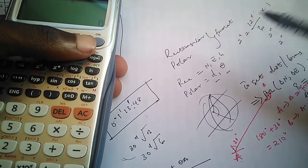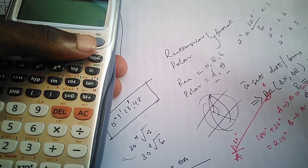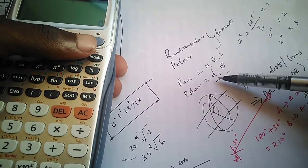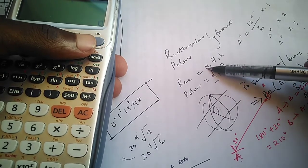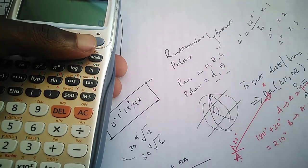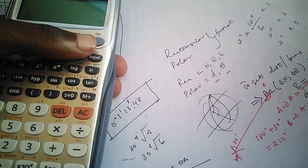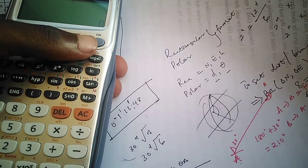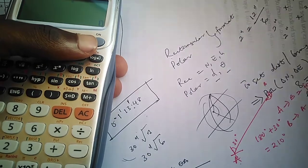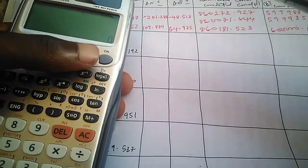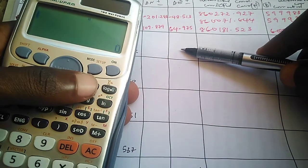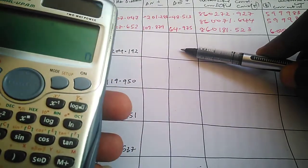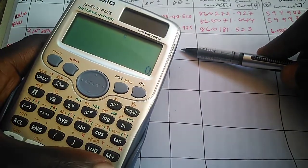Delta northing and delta easting are just the difference in northing and difference in easting — that's what delta means. To get these values we are going to use the RECT function on the calculator. Previously when we did our POL computation we used the POL function because we were looking for distance and bearing, but since we are looking for delta northing and delta easting, we use the RECT function.